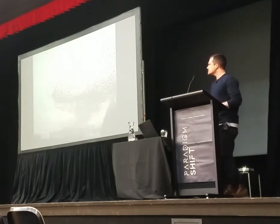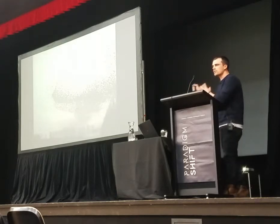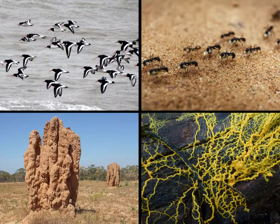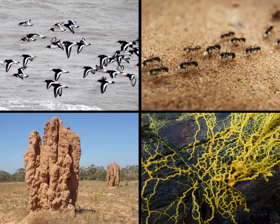Even if birds had the kind of communication devices that we have, there's still no way they can coordinate this kind of act in such large numbers. We see this kind of behavior all throughout nature — in the flocking of birds, the organization of ant trails, the complex architecture of termite mounds, and even in the growth patterns of simple organisms like slime molds.